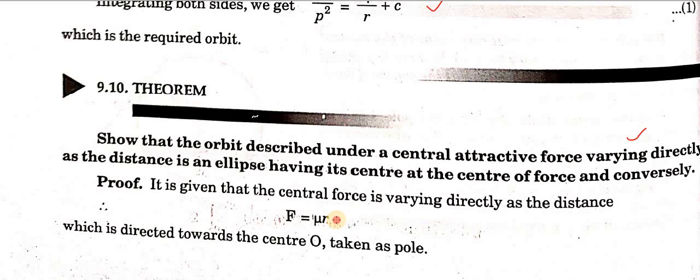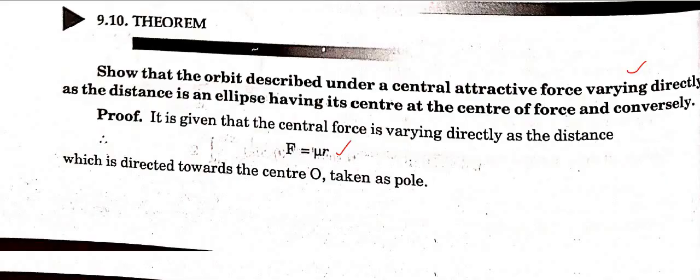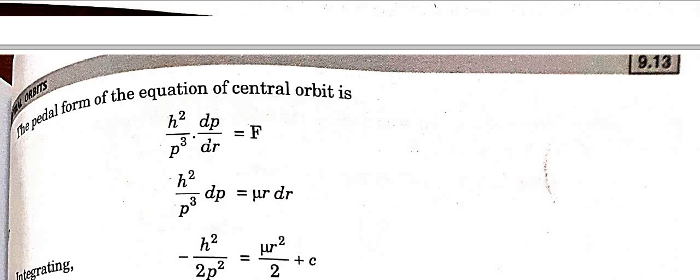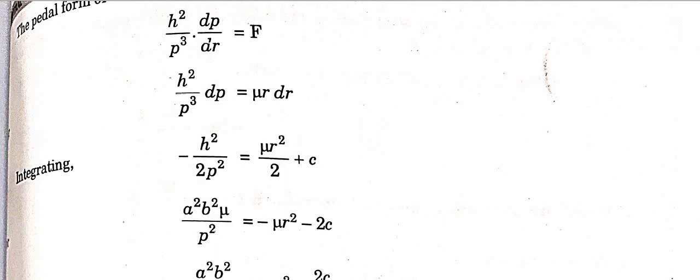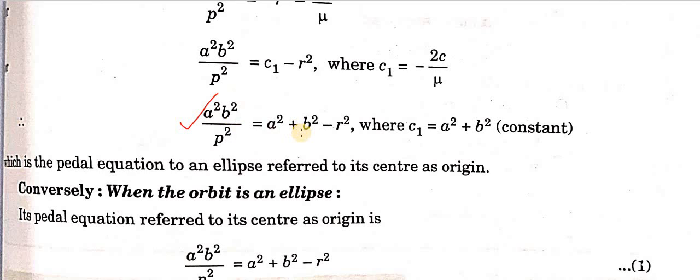We write F = μr, where O is the pole, which means the origin. Again, we use the pedal form, just as discussed in the first theorem. We do integration and get the final expression in r and p terms. The corresponding orbit equation comes out, and if we check this equation, it is the equation of an ellipse — expressed in the pedal form.